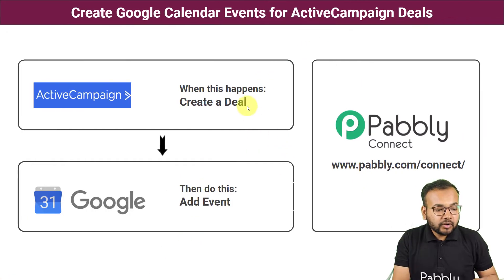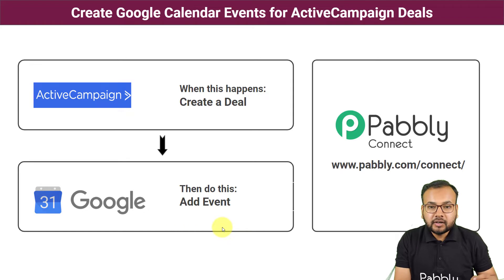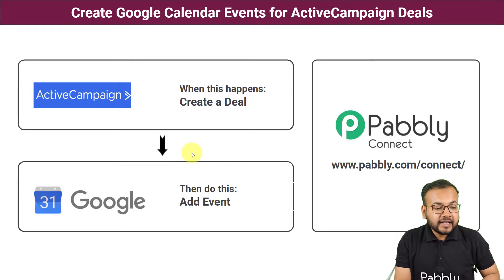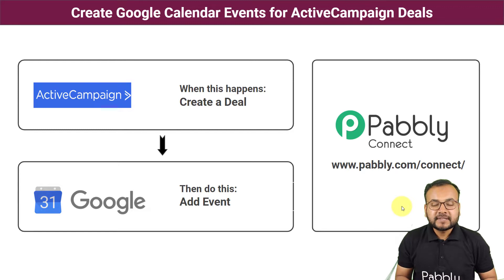So here we are going to automate this. The flow is: as and when you create a deal in ActiveCampaign in any pipeline, an event will be created automatically for that deal and reflected on Google Calendar. You will not have to manually check deal details or create an event — it will happen automatically, saving your time and manual effort. To make this happen we are using Pabbly Connect, an integration and automation tool, and you will not require any coding skills.